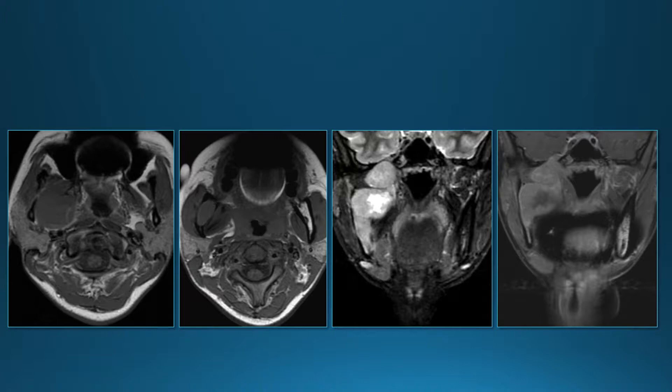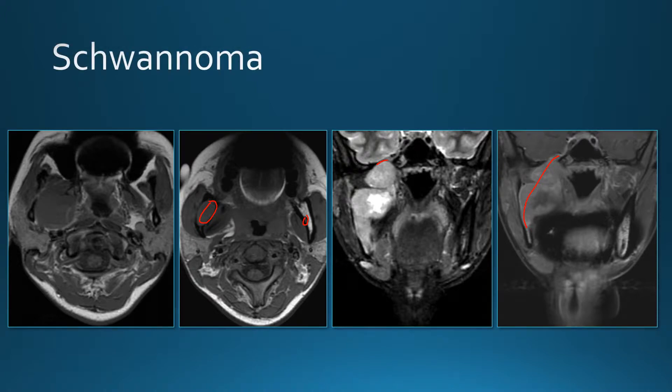Going back to the original case, if we follow the mass upward we can see it extends all the way up to the skull base and goes up to the foramen ovale. On post-contrast images, the mass extends from the foramen ovale all the way down through the masticator space into the mandible and into the canal for the inferior alveolar nerve, which is very enlarged compared to the opposite normal side. This is a schwannoma of V3.